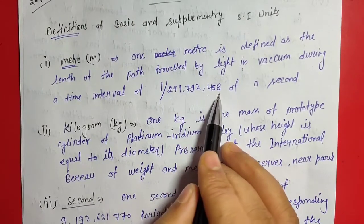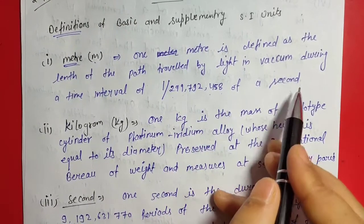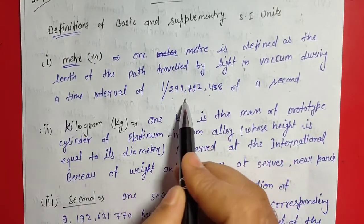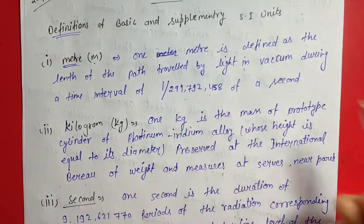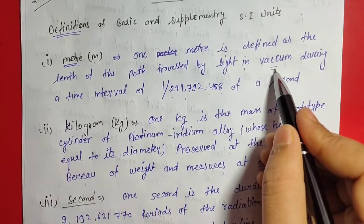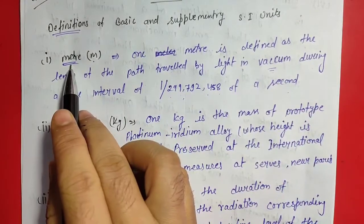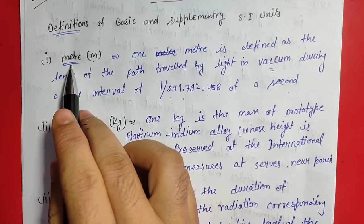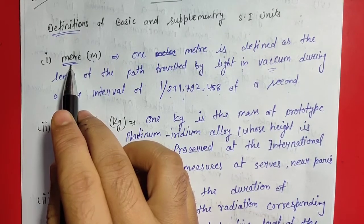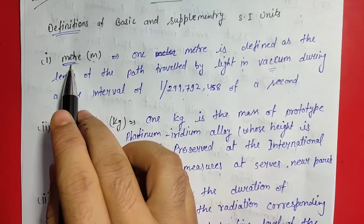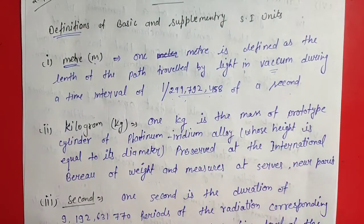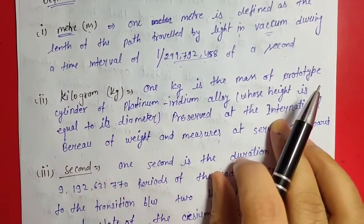That means the distance that light travels in vacuum in that time period — that distance is defined as one meter in the international system. This is the universal definition of one meter.